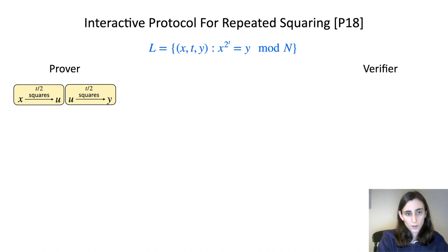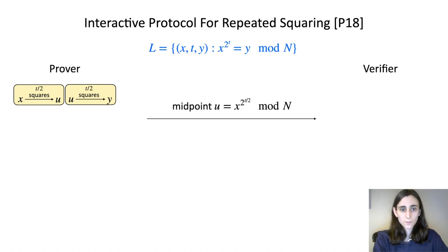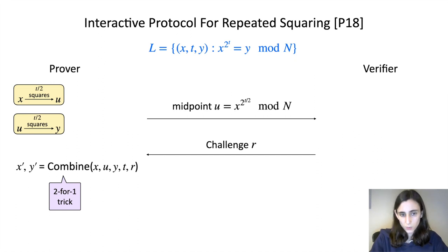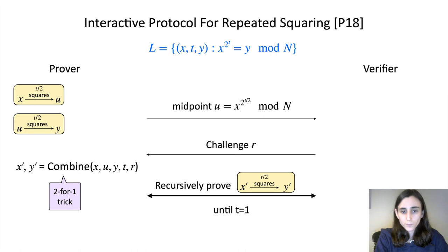The first thing he does is compute a midpoint of the computation, x to the 2 to the t over 2, and he sends this midpoint to the verifier. So now the prover has two statements, each of difficulty t over 2. The verifier sends a challenge, and the prover uses this challenge to combine his two statements into one, which is also of difficulty t over 2. You should think of this as using the challenge R to randomly combine x, u, and y into a new statement, where if the original statement was true, the new statement is true, but if the original statement was false, then the new statement will also be false with high probability. So using this 2 for 1 trick, we just recursively prove this new statement, which again is of difficulty t over 2, so we reduce the difficulty by half until we get down to the base case, which can be verified directly.